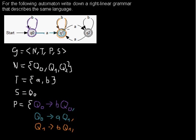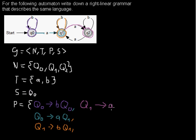The next arc is where we are in q1, reading an a as an input symbol, and moving to q2. That gives us the rule q1 → a q2. The order of the production rules doesn't matter since we have a set.